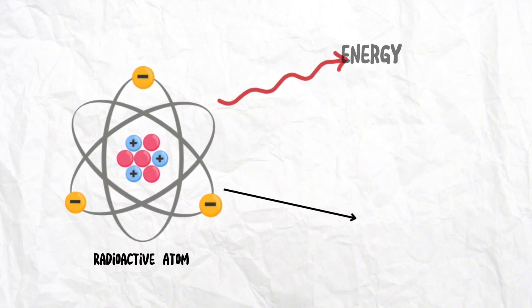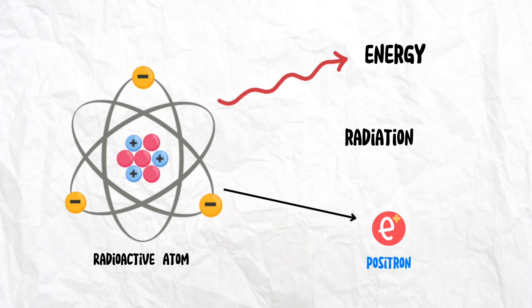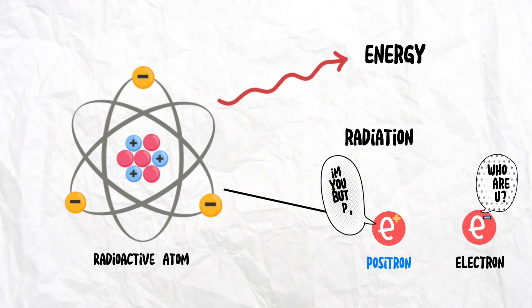During decay, some radioisotopes release a tiny positively charged particle called a positron. Think of it as the antimatter twin of an electron. This emission marks the beginning of PET's magic.